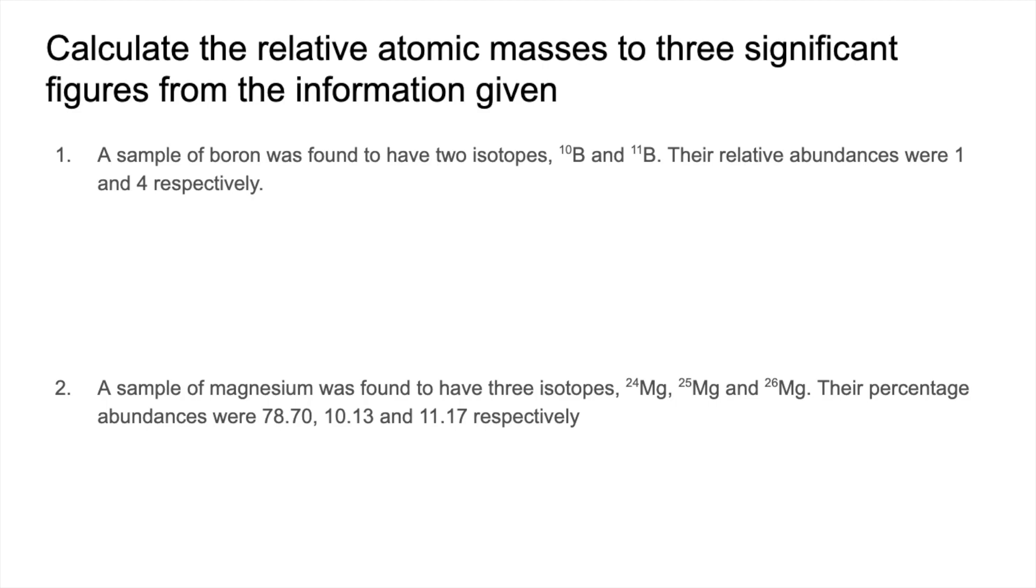Okay, so the first one, we've got a sample of boron. It's found to have two isotopes, boron-10 and boron-11. And we're given the relative abundances of the isotopes. So it's not percentage abundance, it's relative abundance. The first part of this is we put them into the formula where we take the relative abundance and we multiply that by the relative isotopic mass, the mass of that isotope.